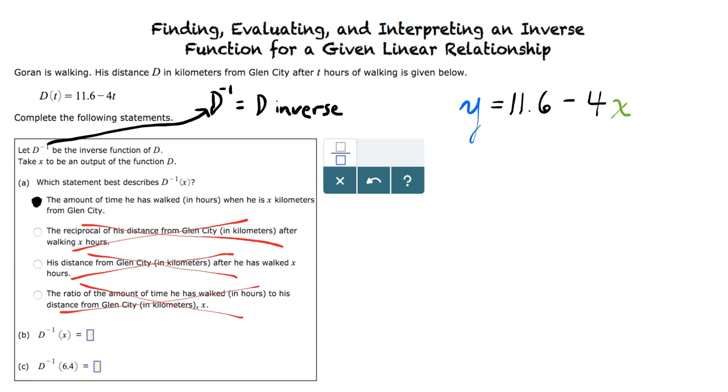Meaning wherever there is an x, we will write a y, and wherever there is a y, we will write an x. Does this mean rewrite the function as x equals 11.6 minus 4y? Yes, so we now want to solve for y. The result will be the inverse function we are looking for.